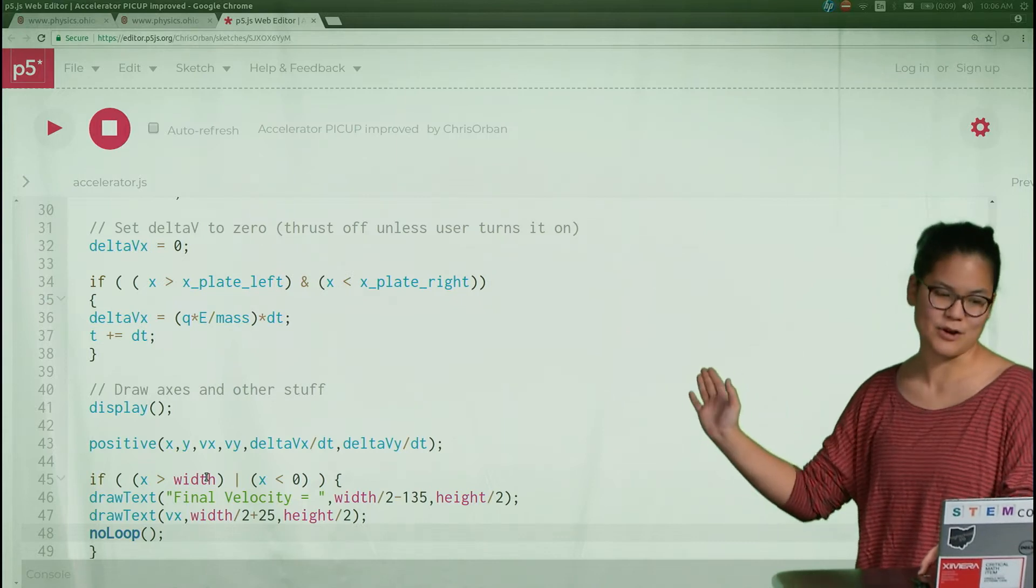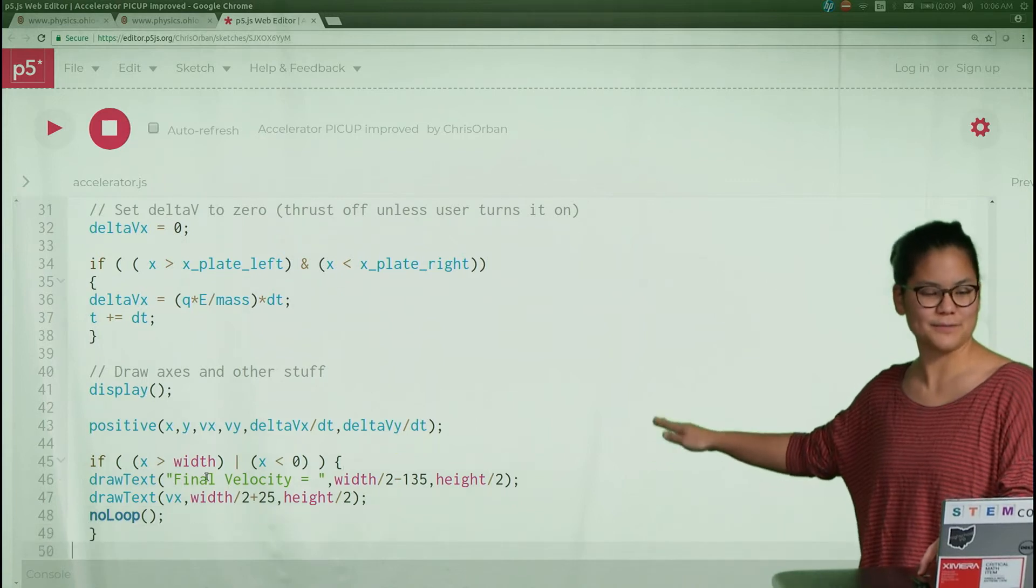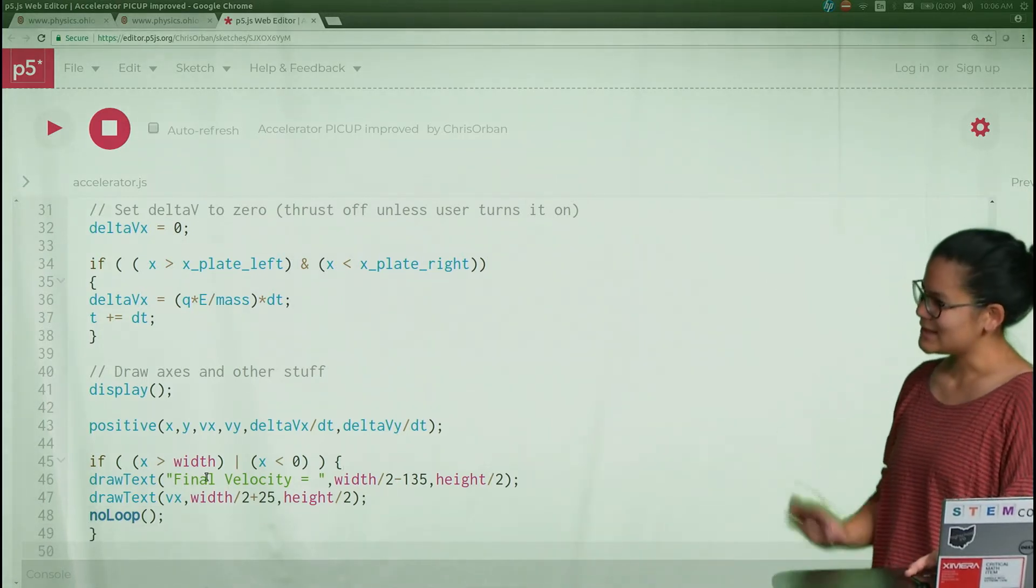Then we update in the next time step the velocity of that particle, but here we just draw what was previously calculated. That's the general layout.